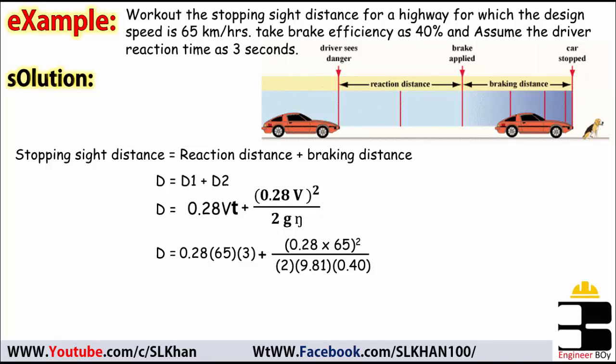So now the reaction distance is going to be 54.6 meters and the braking distance is going to be 42.2 meters, and finally the total stopping sight distance is going to be 54.6 plus 42.2 and that's 96.8 meters, and that's simple.